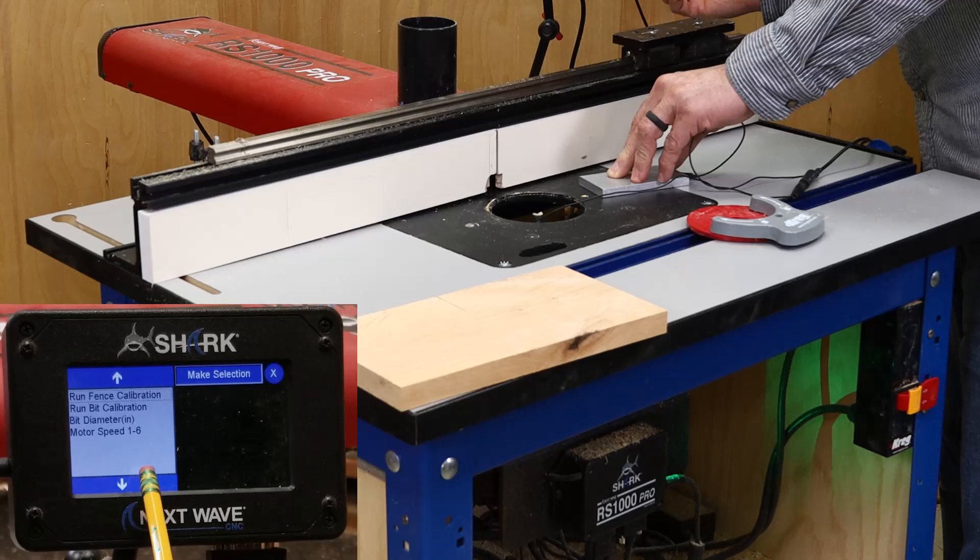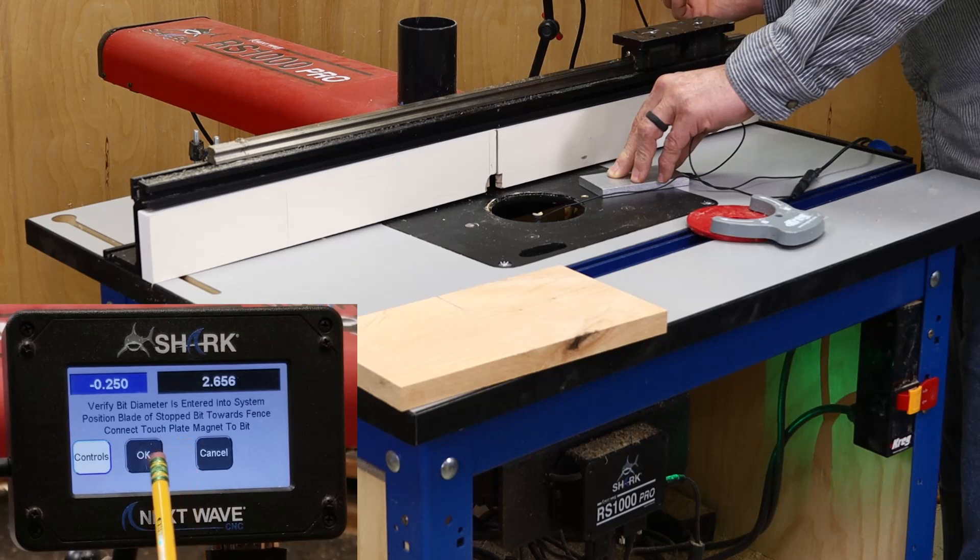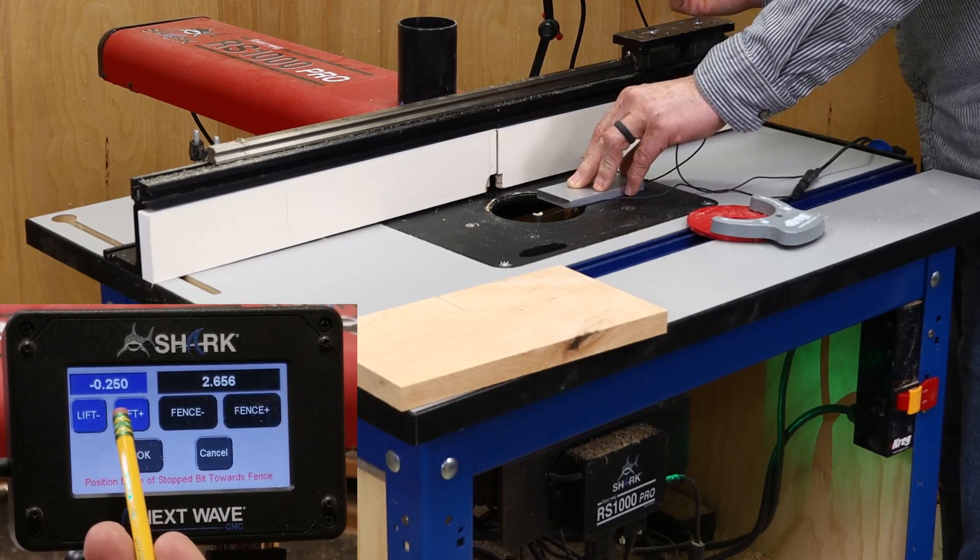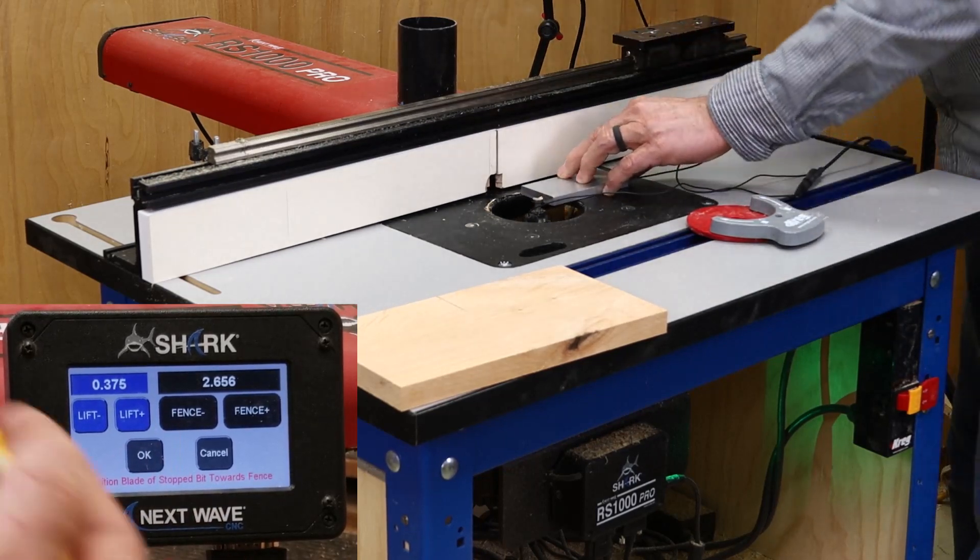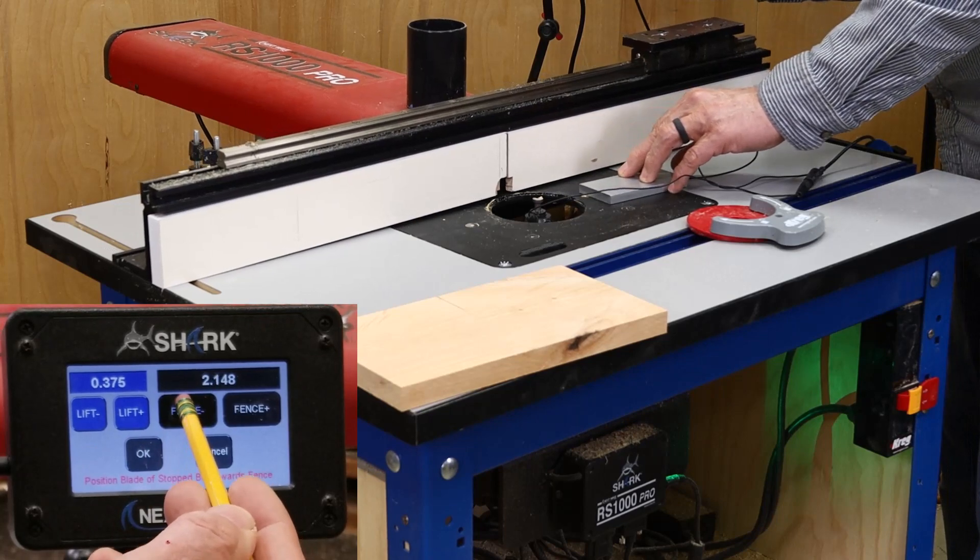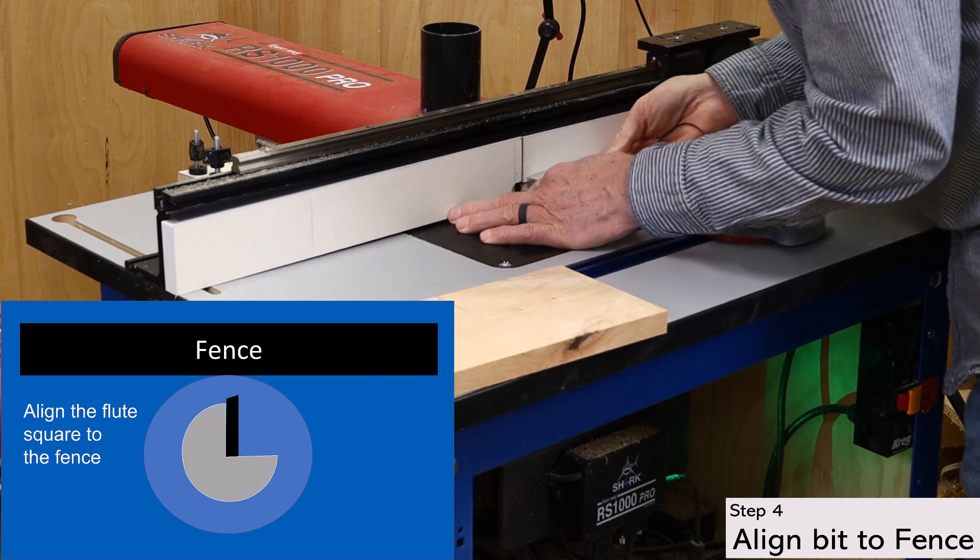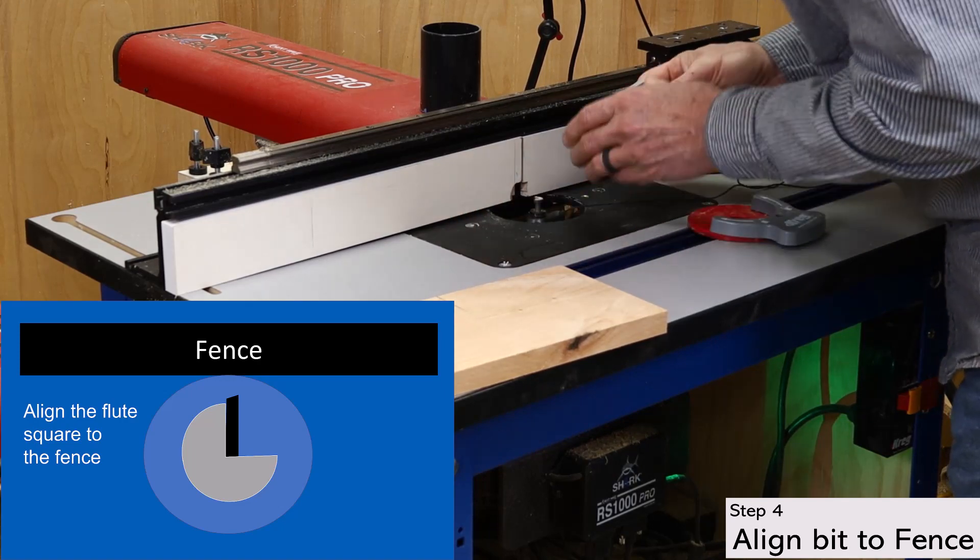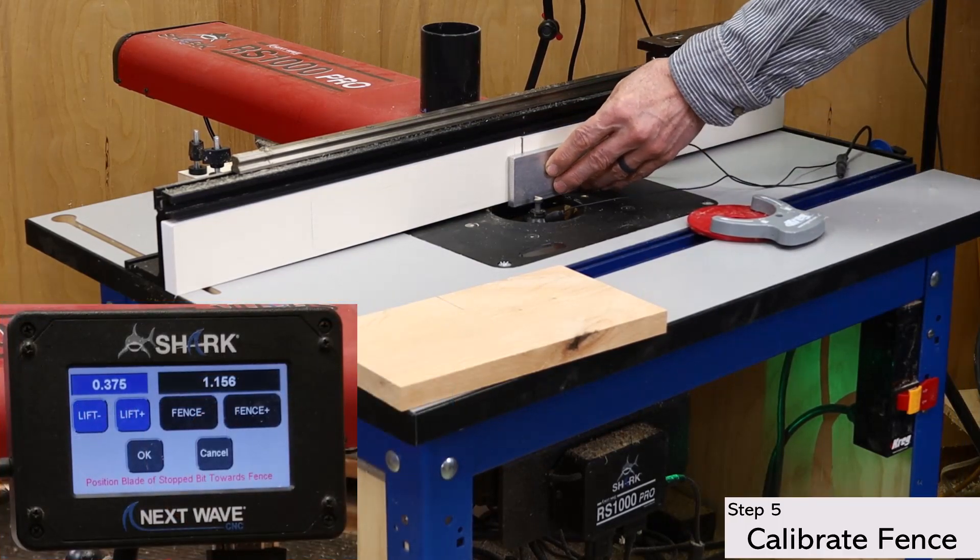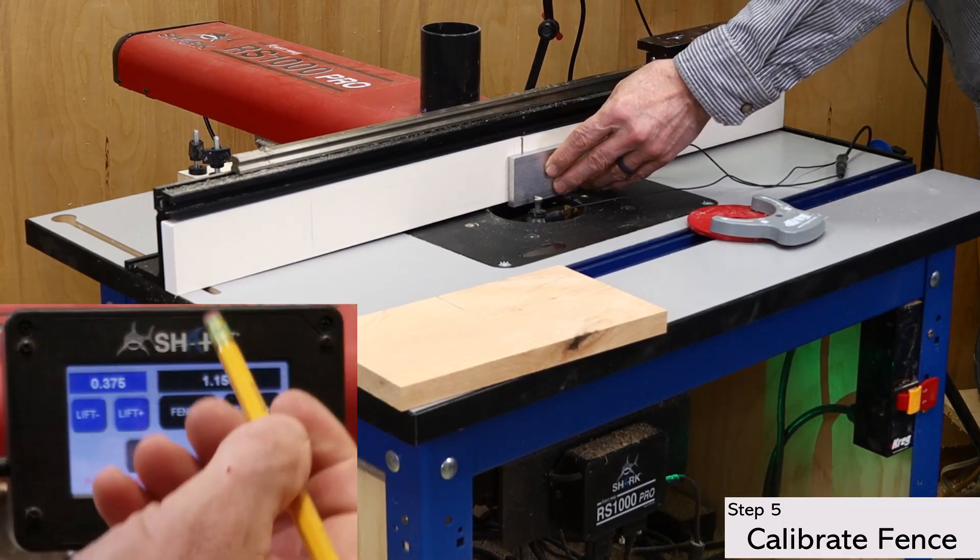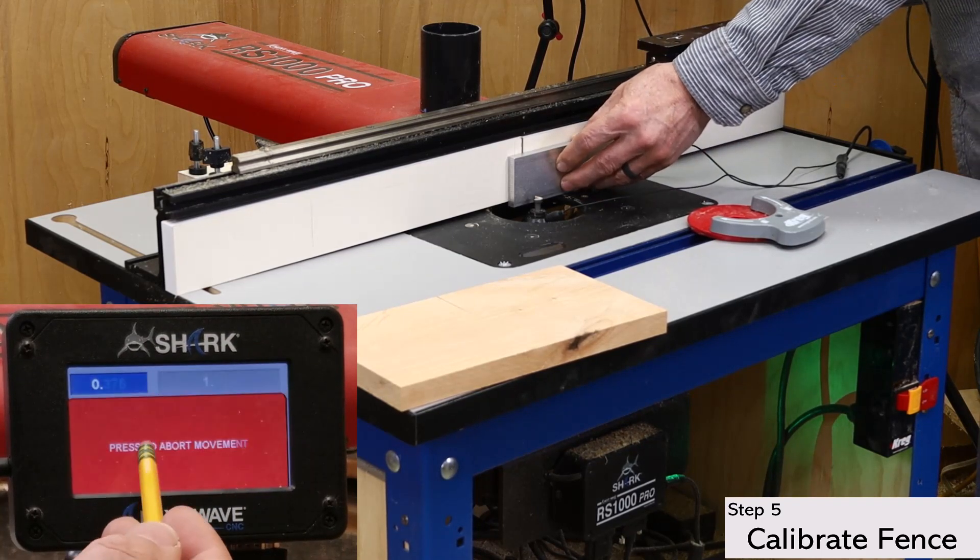You can now go to the fence calibration. Click on the white control button to open the control panel. Use the buttons to lift the bit above the table, as well as bring the fence forward. Now use the touch plate to align the flute to the fence. This ensures that the high point of the cutting edge is closest to the fence, which produces the most accurate result when calibrating the fence. Then position the plate between the bit and the fence, and touch the plate to the bit to verify good connection again. Then press OK to start the fence calibration.